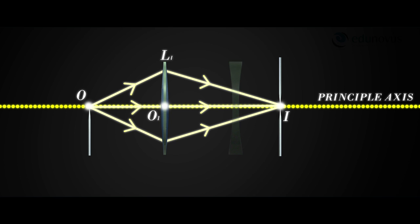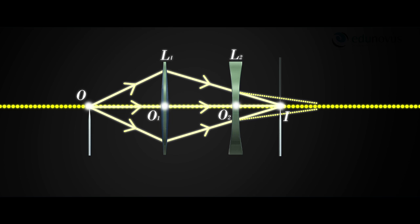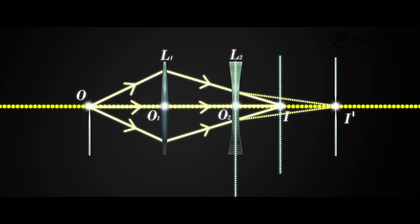The concave lens L2 is placed between the convex lens L1 and the image needle I. The concave lens diverges the rays, and now the image is formed at I'. Here, I is the virtual object and I' is the real image. The distance between O2 and I gives the value of U, and the distance between O2 and I' gives the value of V.